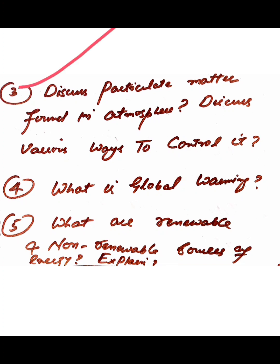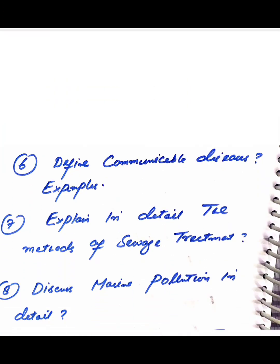Question number four: what is global warming, its causes and consequences. Then: what are renewable and non-renewable sources of energy — explain. Define communicable disease with examples. These are important long answer questions that are likely to appear in the exam.